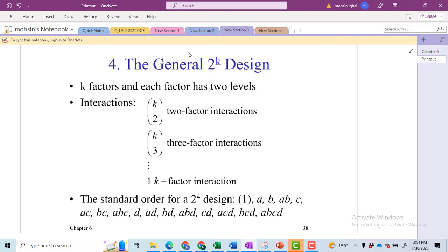Hi, I welcome all of you in this series of videos in which I will discuss the special case of 2^k factorial design and the case is 2^k factorial 4. In this design, we have 4 factors and each factor has 2 levels.